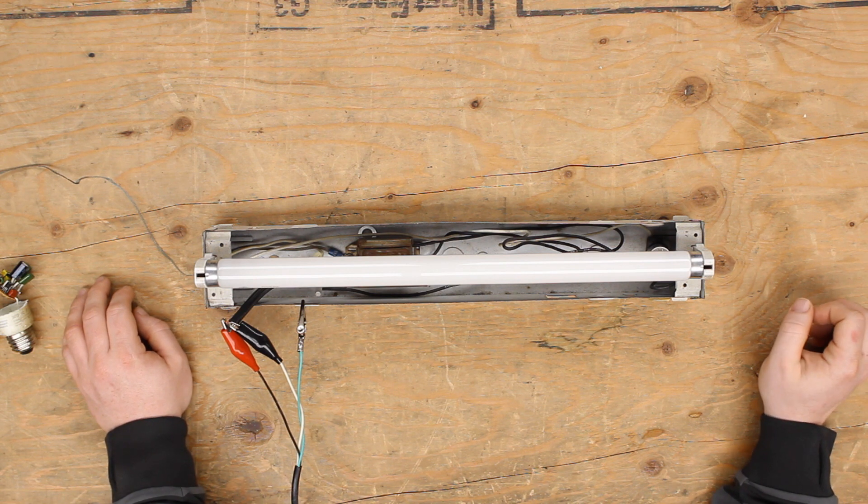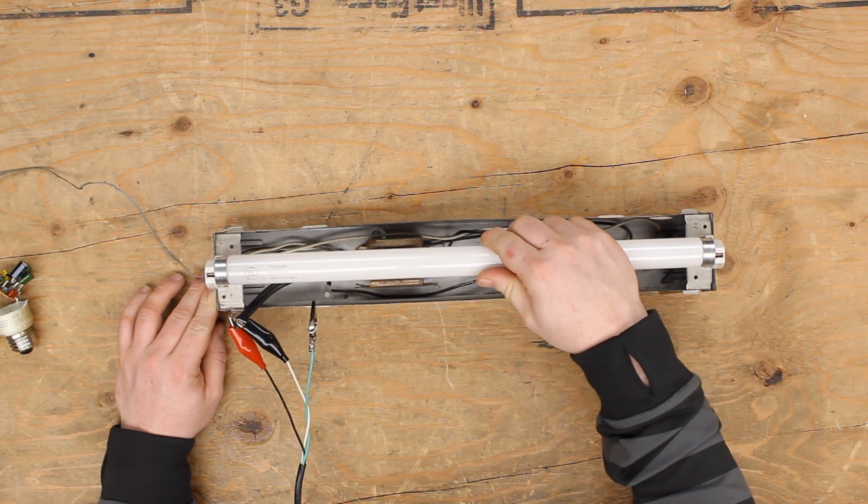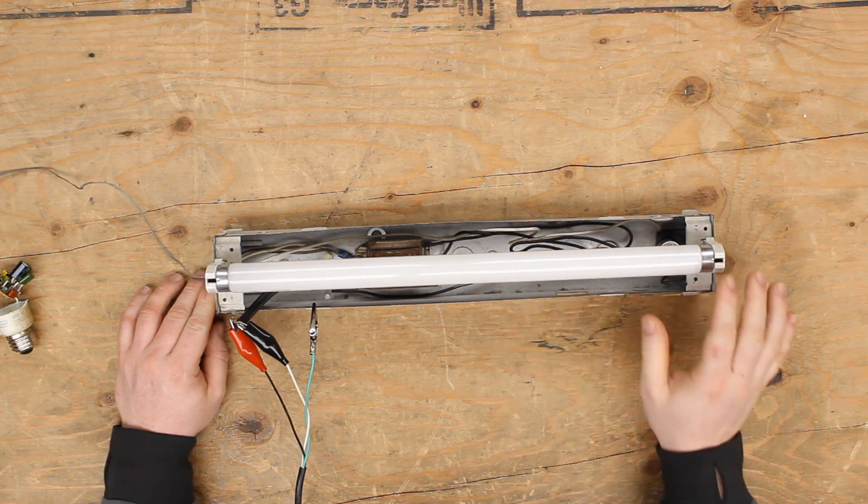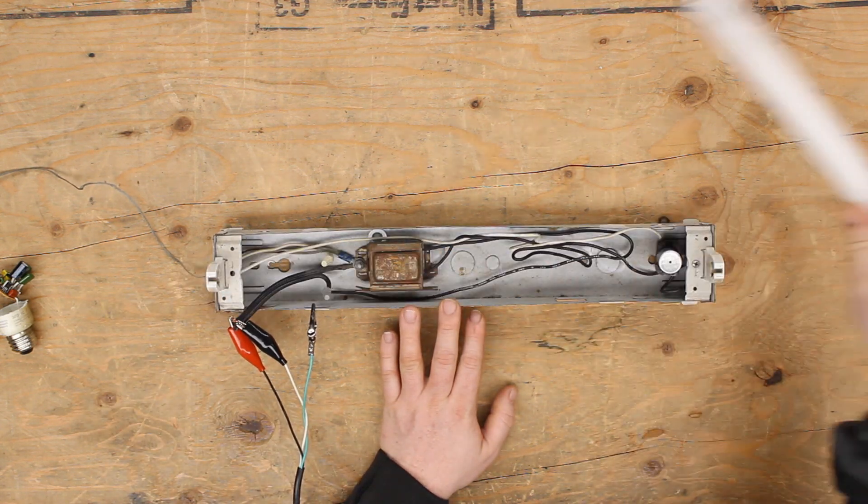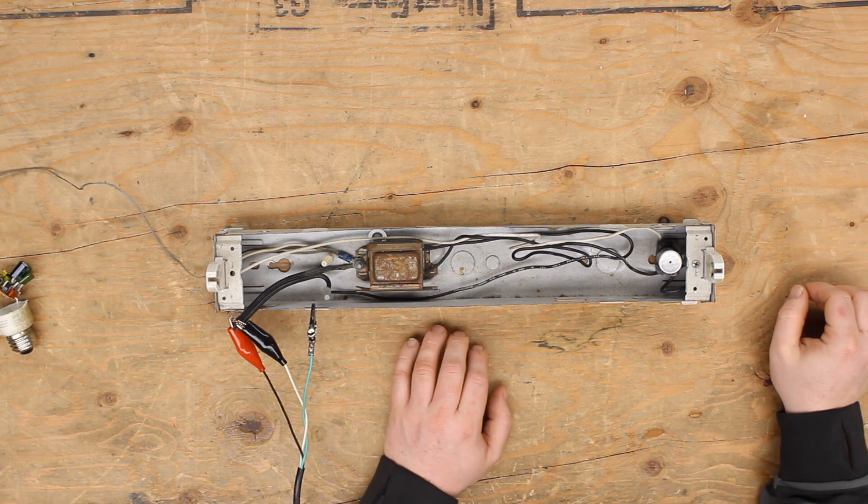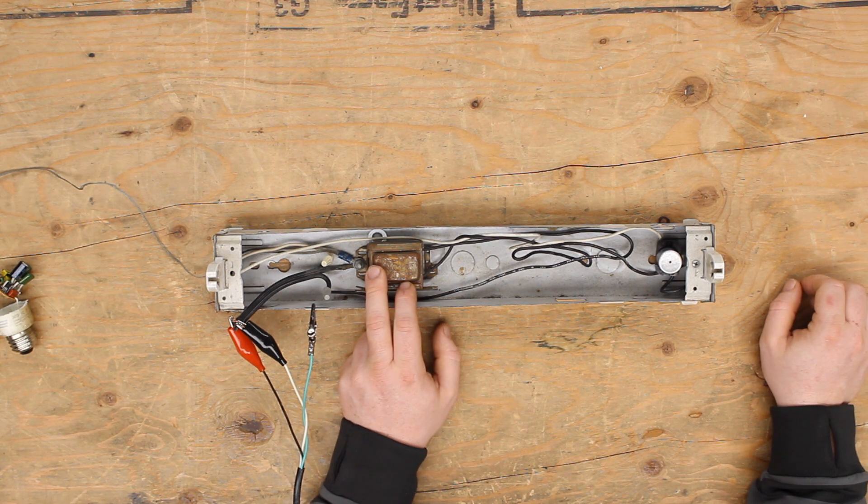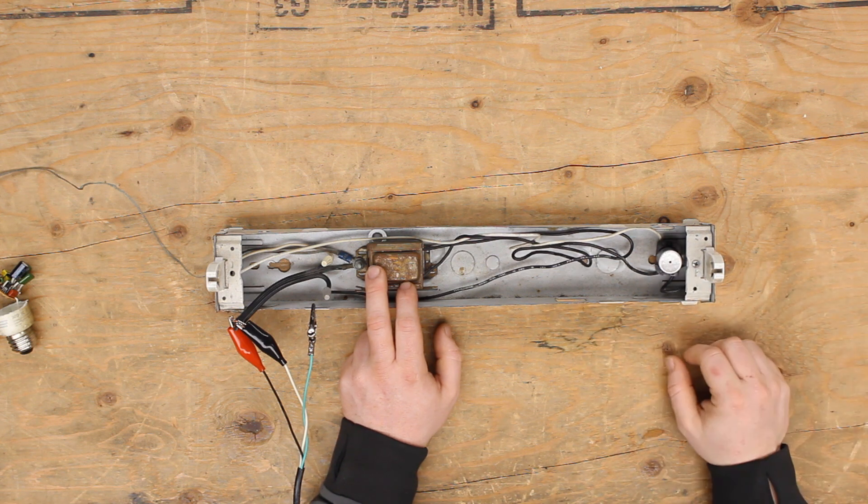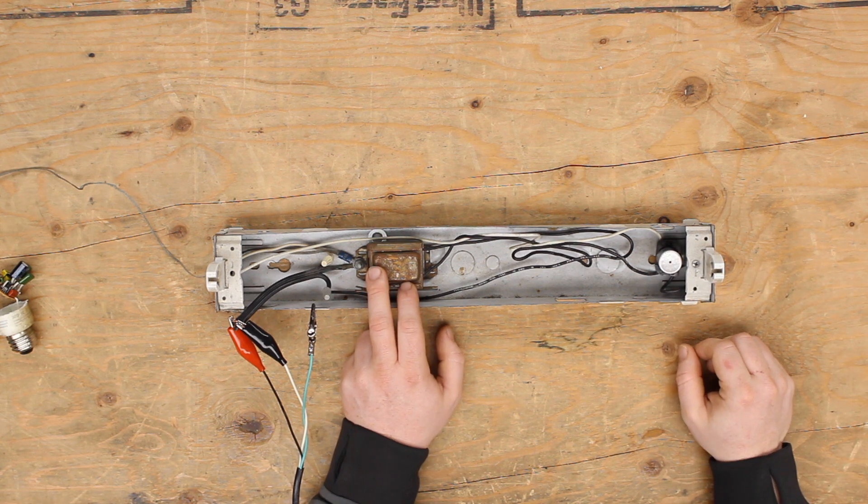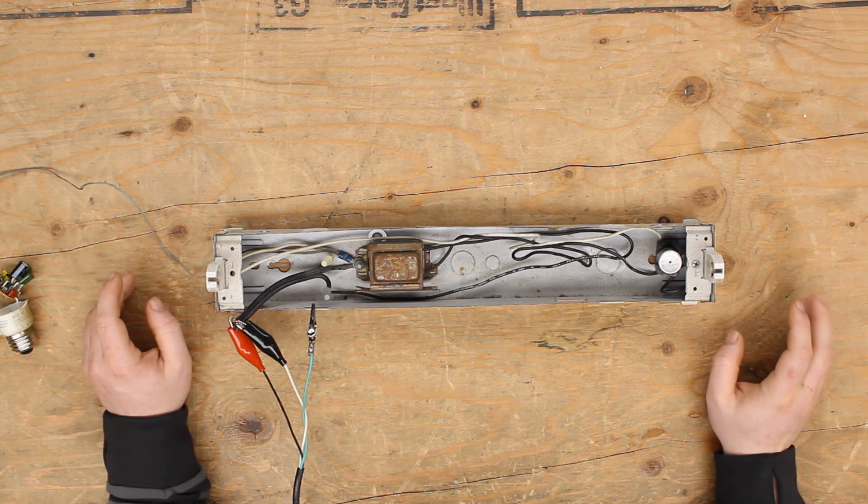This is a 15-watt tube. These lamps are very simple devices: you have a choke ballast here—it's just a magnetic core—and you have a starter. In this case it's an FS2 starter, and that's all there is to it.